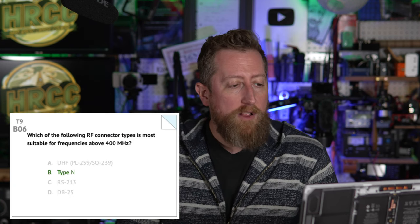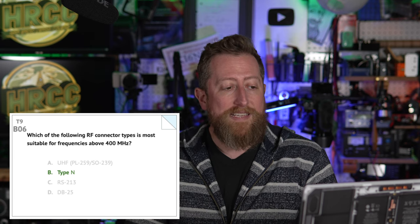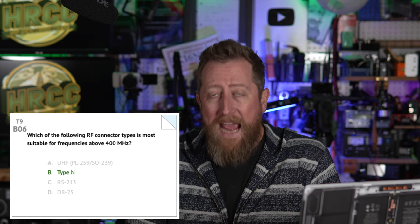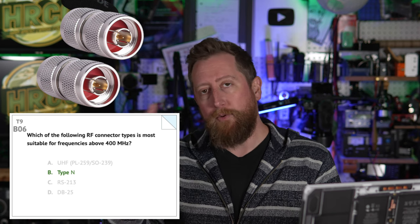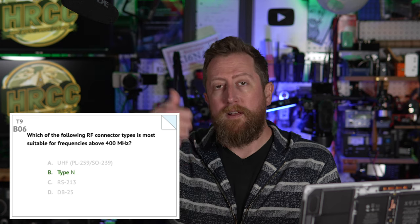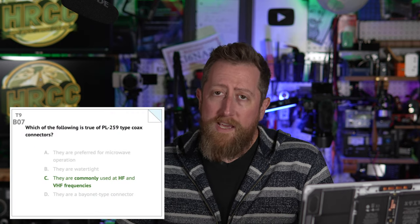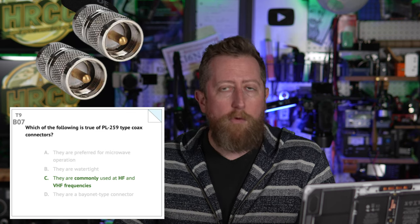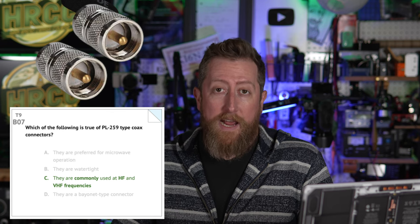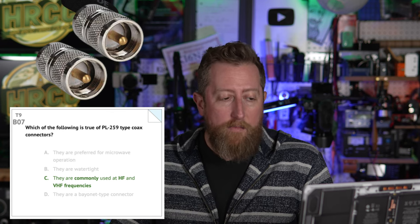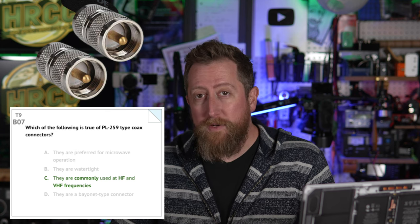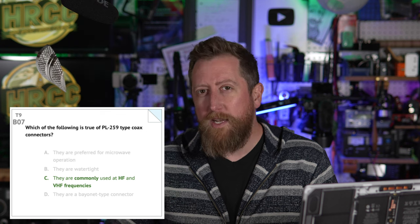Bravo 06: Which RF connector type is most suitable for frequencies above 400 MHz? The answer is B — Type N. Type N connectors are specifically designed for better performance at higher frequencies, which is why you see them on coax used for microwaves and the upper UHF space. Bravo 07: Which of the following is true of the PL-259 coax connector? Answer C — they are commonly used at HF and VHF frequencies. That's the common connector on mobile ham radios and base station HF radios. Once you get to UHF, you switch back to Type N.